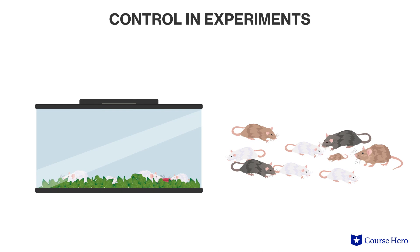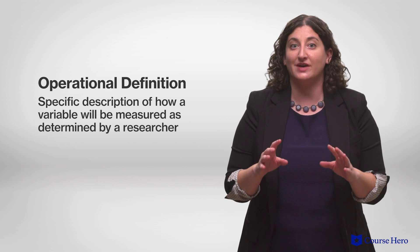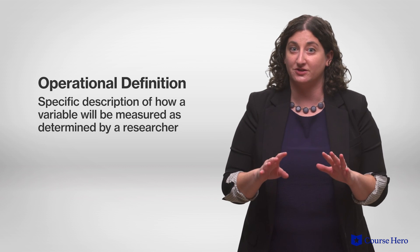The high level of control in experiments allows researchers to draw conclusions about cause and effect, but because it is so controlled, it may not mirror the real situation they are trying to study. Although these methods differ, they all require researchers to develop operational definitions — specific descriptions of how a variable will be measured. This is important because many questions about behavior are too vague to be useful. For example, instead of measuring 'sleep deprivation,' a researcher must specify 'less than four hours of sleep per night,' and clearly communicate that definition so other researchers understand exactly what was measured.